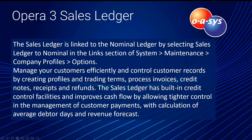The sales ledger is linked to the nominal ledger by selecting the option in the profiles section of the system. You can manage customers efficiently by creating profiles, trading terms, process invoices, credit notes, receipts, and refunds. The sales ledger has built-in credit control facilities and improves cash flow by allowing tighter control in the management of customer payments, with calculation of average debtor days and revenue forecasts — all of which we'll see in the reporting section.